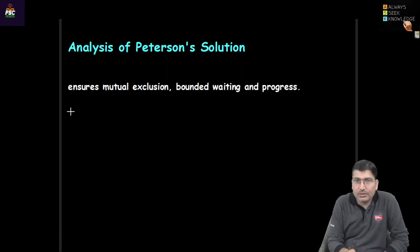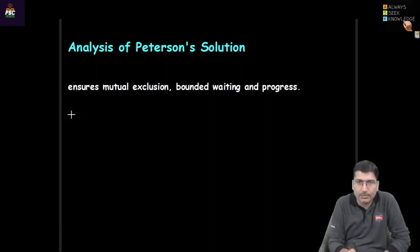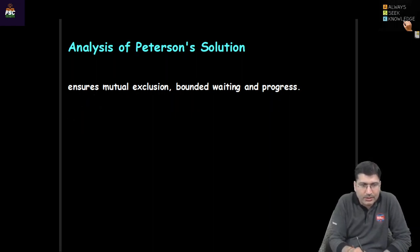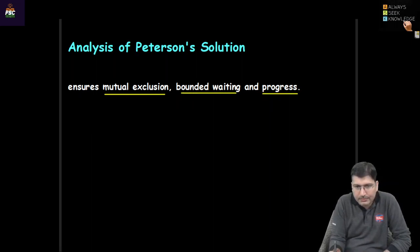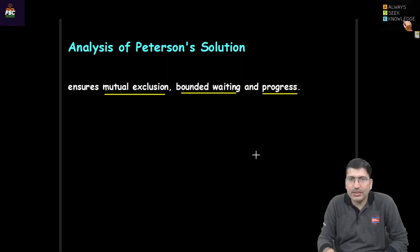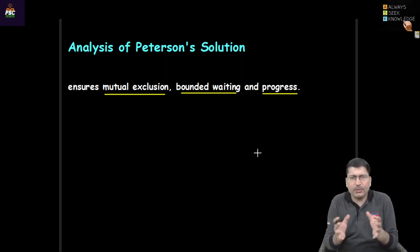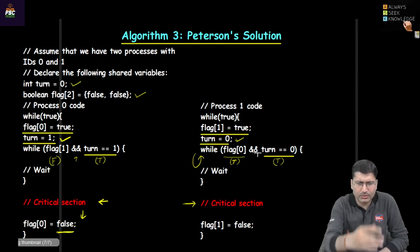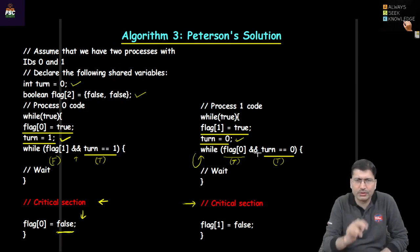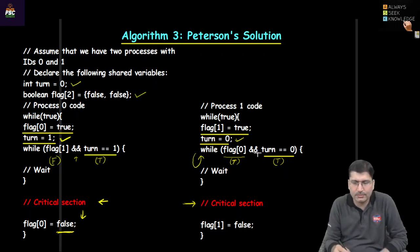Peterson's solution is an efficient solution for two-process synchronization. It ensures mutual exclusion, bounded waiting, and progress. There is also a form of Peterson's solution for multiple processes, but this particular solution is written for two processes only. Thank you everyone for connecting — see you in the next class.